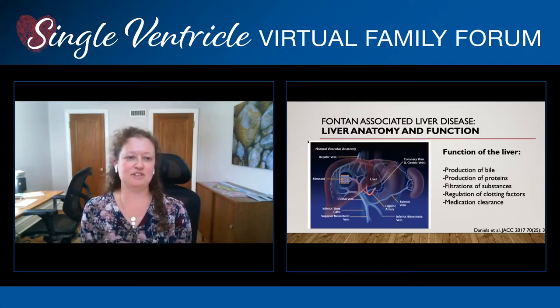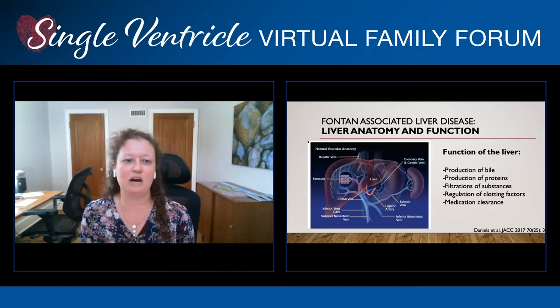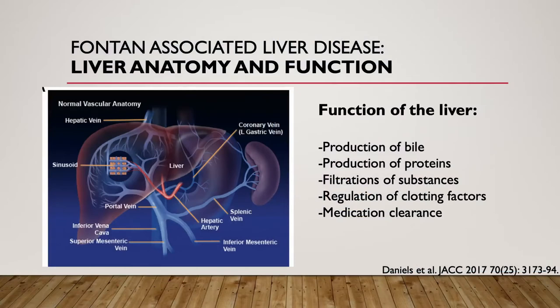To start, I wanted to speak about the function and overall anatomy of the liver, which will give you background as to why Fontan physiology affects the liver over time. The liver produces bile and proteins. The bile gets excreted, stored in the gallbladder, and enters the small intestine to help absorb food, nutrients, and vitamins. It also produces proteins like albumin that help move cholesterol, filters toxins like ammonia, and regulates clotting factors and helps clear medications.